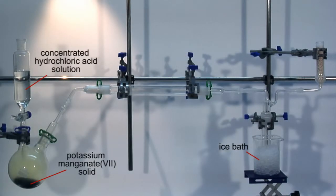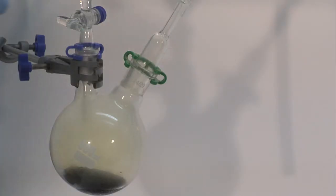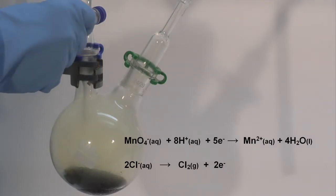The manganate ion is a strong oxidizing agent and easily converts chloride to chlorine at room temperature.